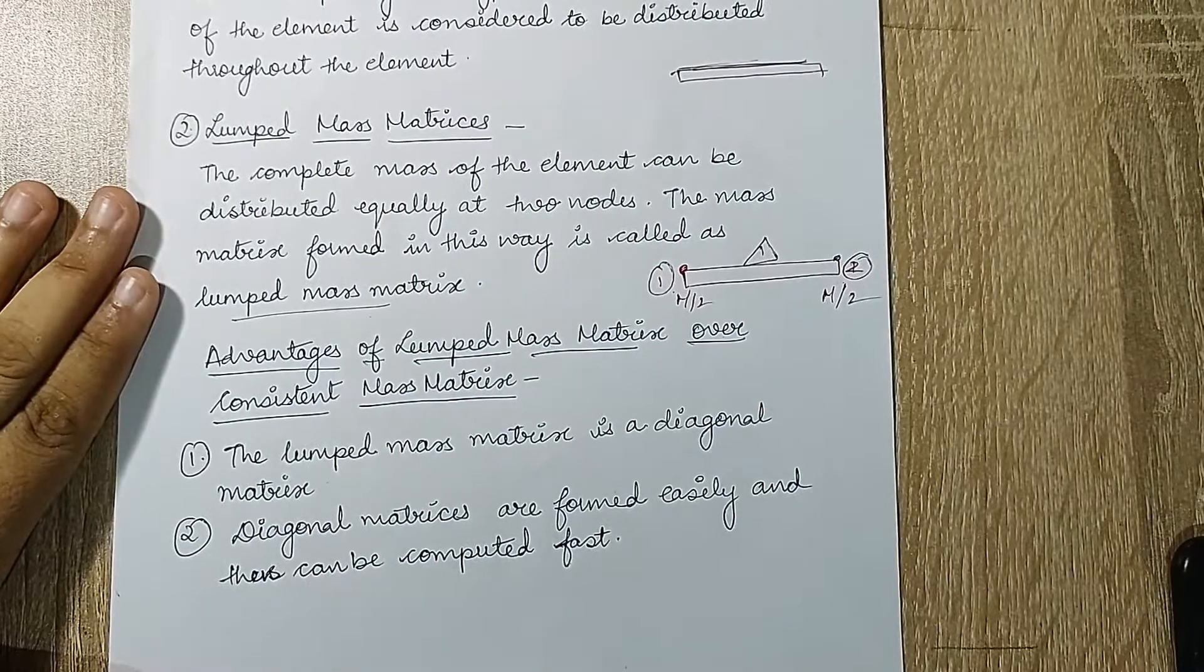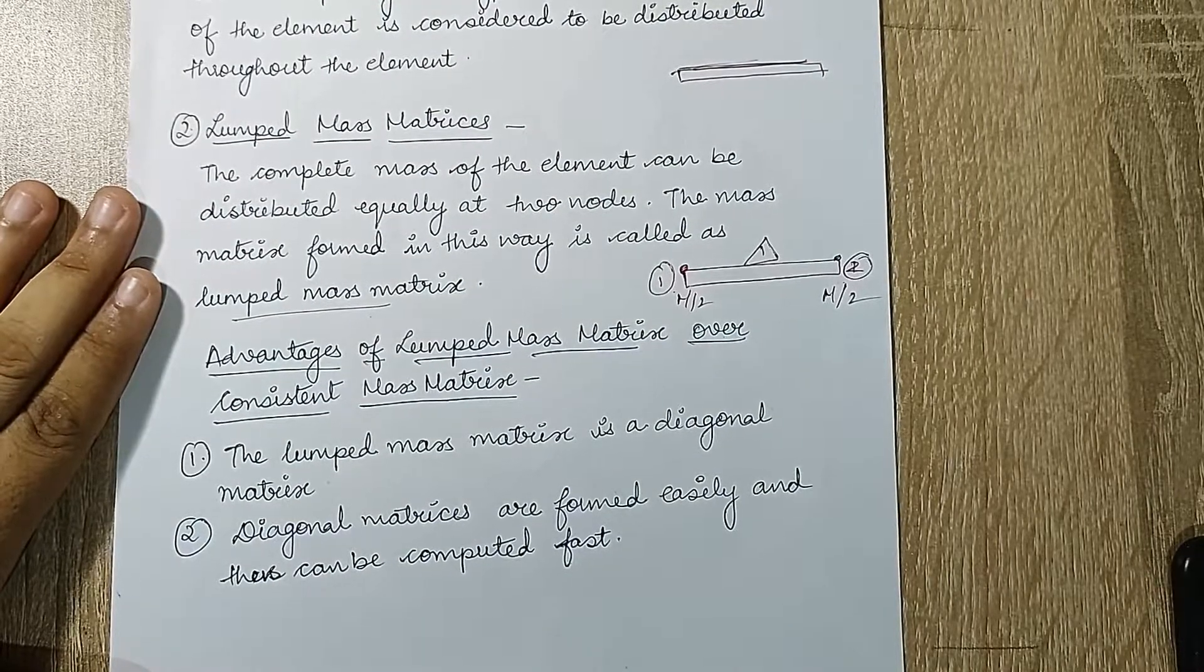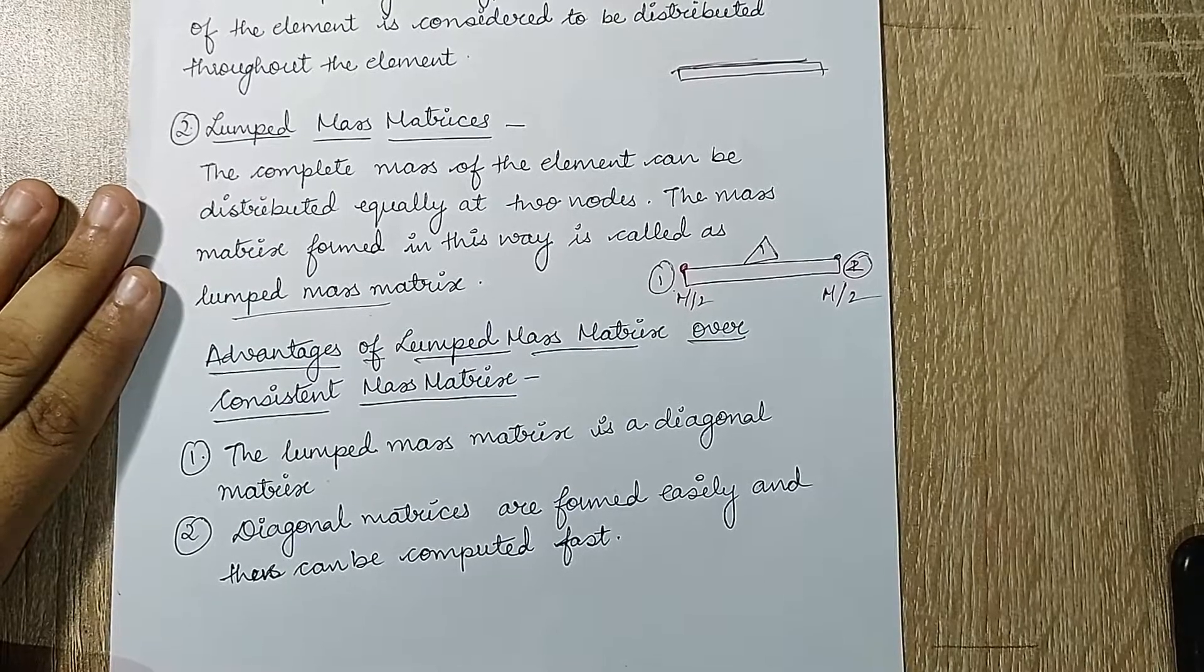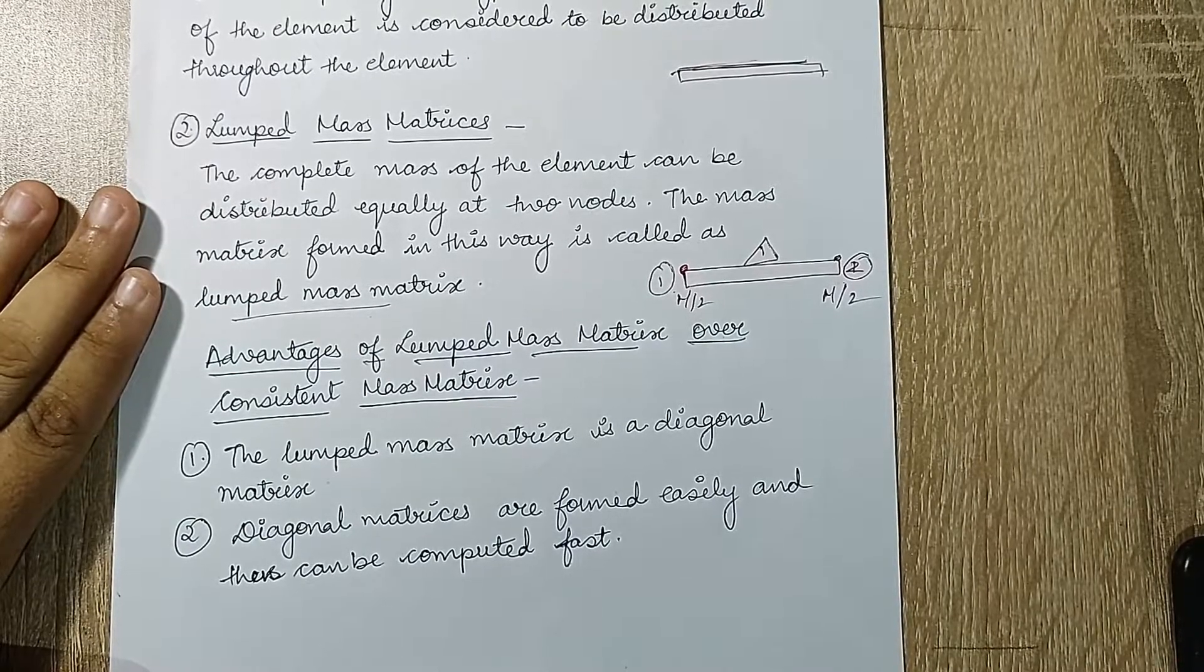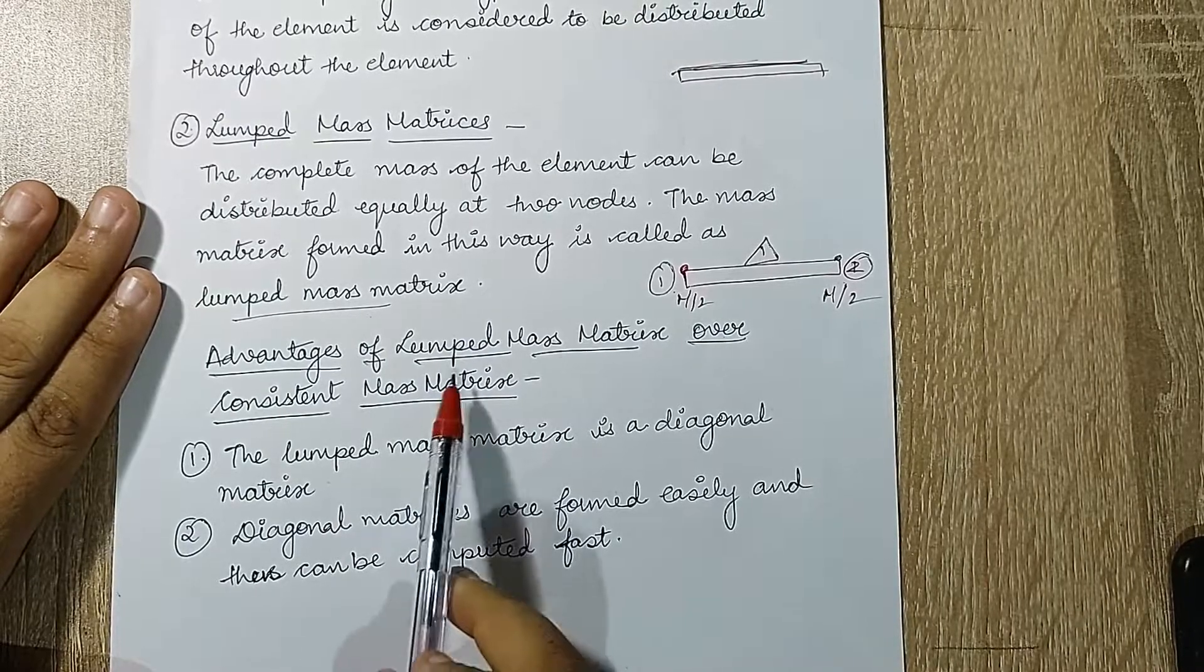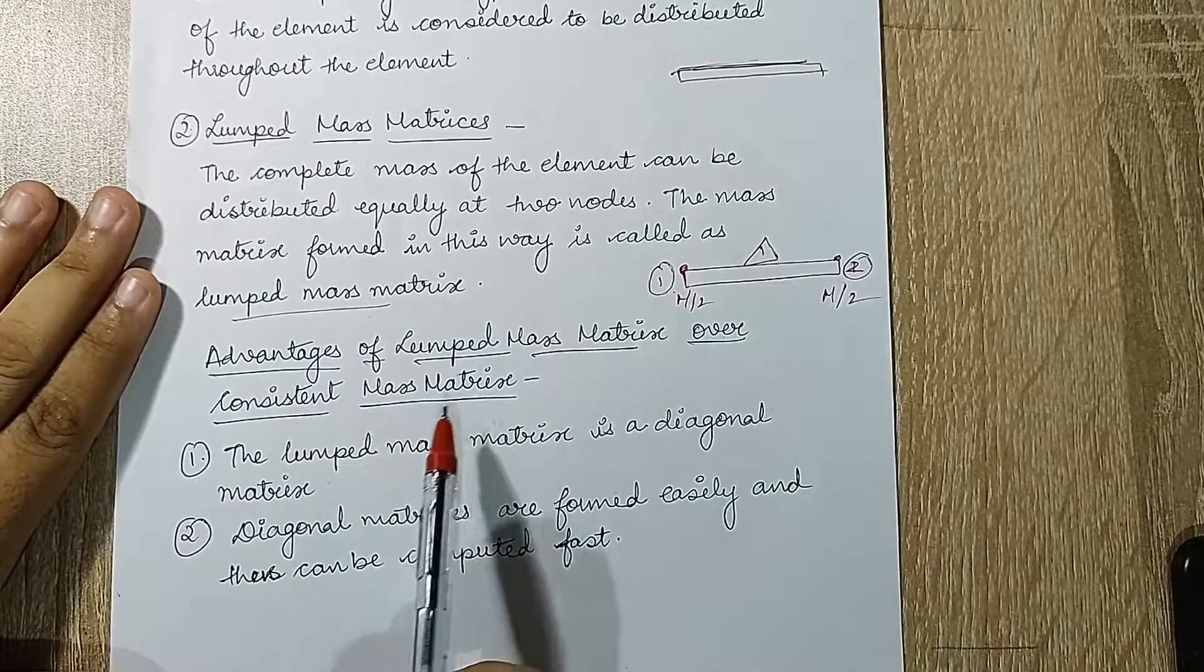When you are solving a numerical, you can use any one of the two methods. If it is mentioned to solve with a particular method, then you have to use that method. But if it is not mentioned, then you can use any one of the two methods. I would prefer going for lumped mass matrix over consistent mass matrix.